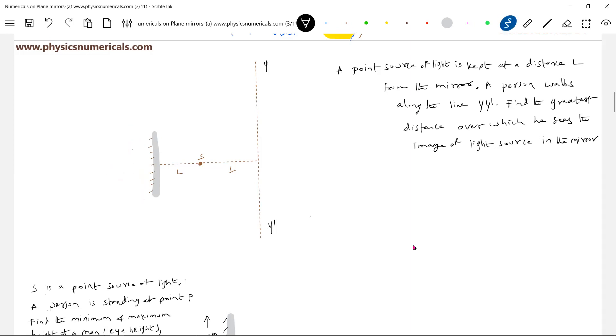Let me write that data A, B. What is the greatest distance over which you will see the image? Now how to proceed with this one? The person will be moving along YY'.